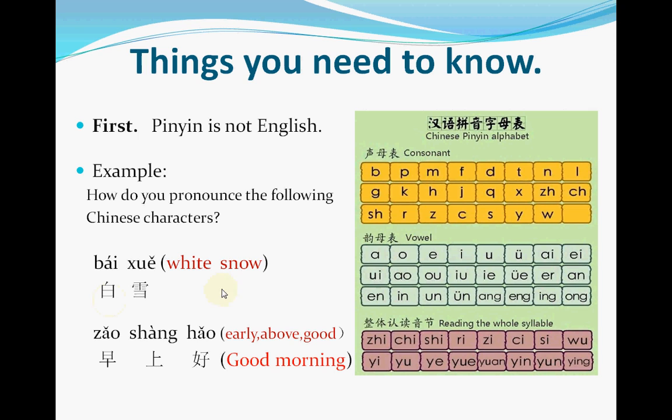Bai means white, xue means snow. Another example: 早上好 means good morning, but each character has its own meaning. Zao means early, shang means above, hao means good — but put together they mean good morning. The Pinyin works just like this: Z + ao = zao, sh + ang = shang, h + ao = hao. 早上好. This is the first thing you need to know: Pinyin is not English.